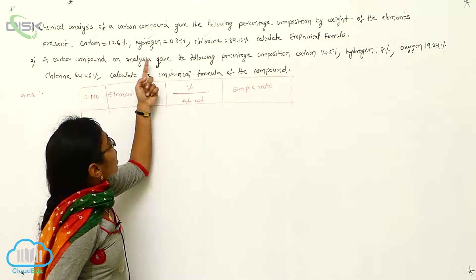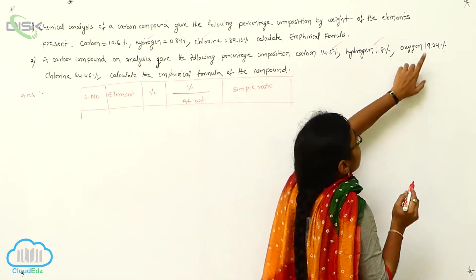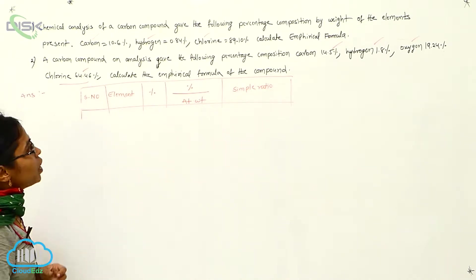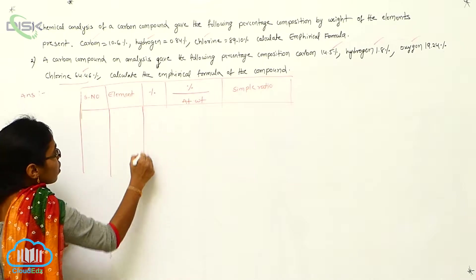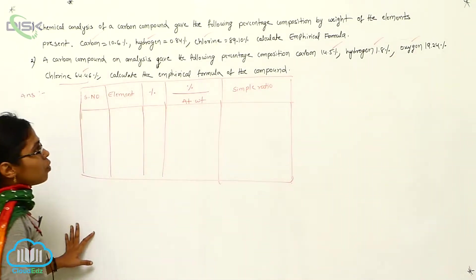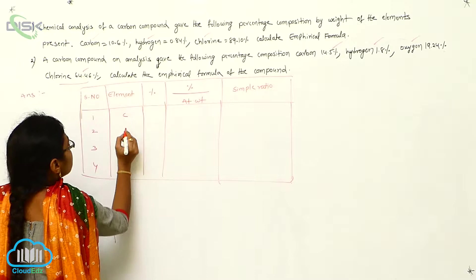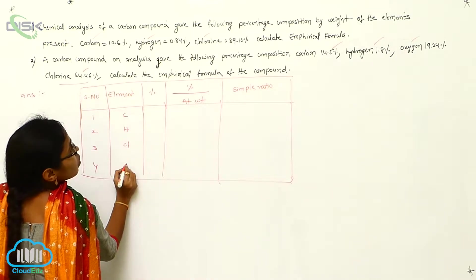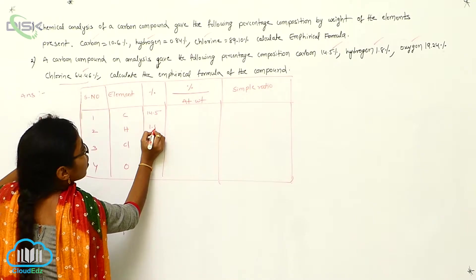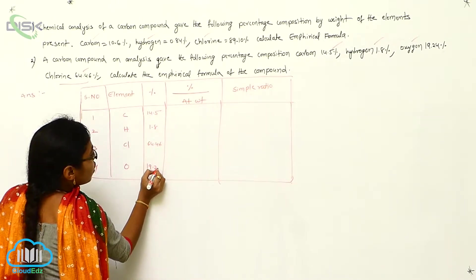For the second compound, a carbon compound analysis gives the following percentage composition: Carbon is 14.5%, Hydrogen is 1.8%, Oxygen is 19.24%, and Chlorine is 64.46%. I am taking the same table, with four elements present: Carbon, Hydrogen, Chlorine, and Oxygen.